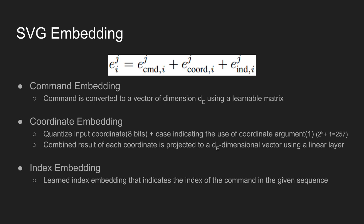To generate a command embedding, the command type shown in the previous table is converted to a vector of dimension dE using a learnable matrix. For coordinate embedding, the work follows PixelCNN and PolyGen and first quantizes the coordinates to 8 bits, also including a case indicating the use of a coordinate argument. This leads to an input dimension of 257 for the embedding. Each coordinate is first embedded separately with a weight matrix of size dE by 257, then the combined result is projected to a dE dimensional vector using a linear layer. Lastly, a learned index embedding is used to indicate the index of the command in the given sequence.